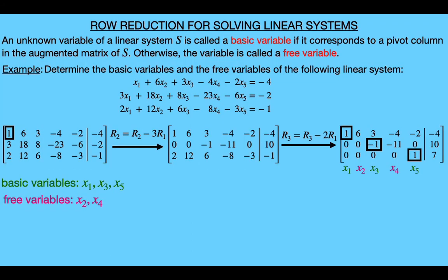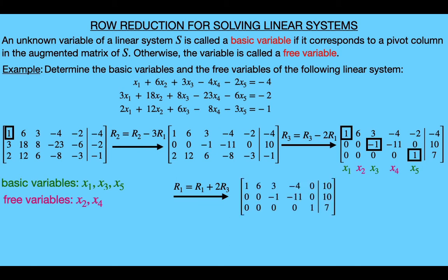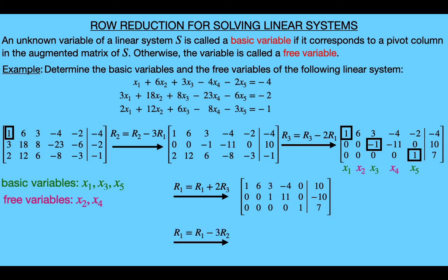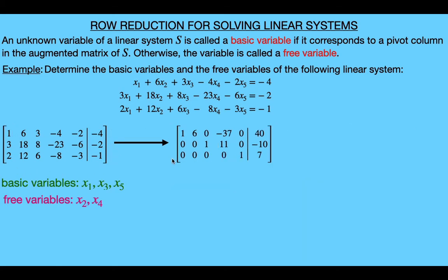So let's go back to our first example and continue row reducing until we get the reduced echelon form. Starting with this column, we'll make this a zero by replacing the first row with the sum of itself and two times the third row, and that will give us this new matrix. From here we'll move to this spot, and to make this a one we'll multiply every entry in row two by negative one, and we'll get this new matrix. Now to make this three a zero, we'll replace the first row with the sum of itself and negative three times the second row, and then that will give us this reduced echelon matrix. So we started with this augmented matrix and obtained this row equivalent matrix in reduced echelon form. The linear system for this matrix is given by these equations, and we know that this linear system will have the same solution set as our original linear system since these two matrices were row equivalent, so we can solve the original system by solving this easier linear system.